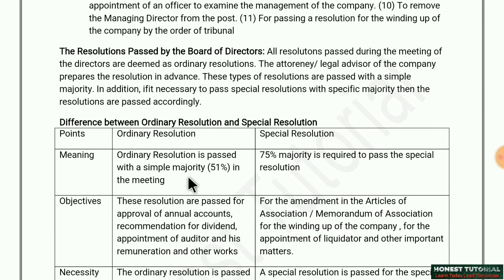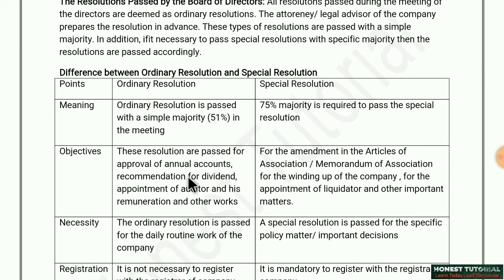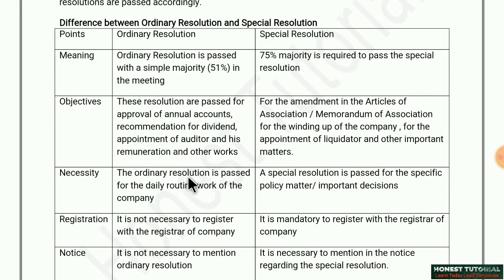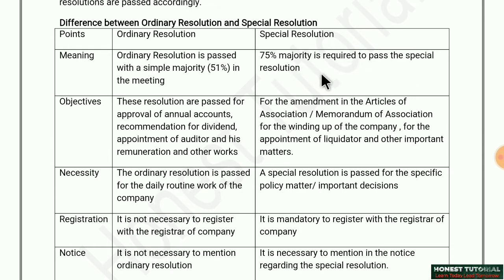Now let us see the difference between ordinary resolution and special resolution. First, regarding meaning: ordinary resolution is passed with a simple majority of 51% in the meeting — if a resolution passes with more than 51% majority it is called ordinary resolution. Special resolution requires 75% majority to pass.